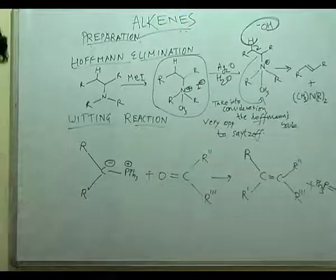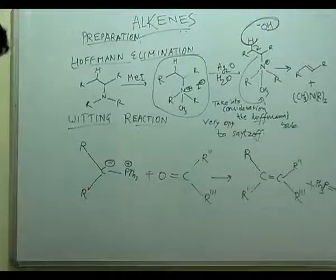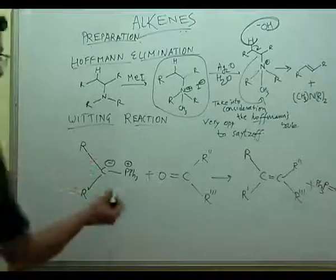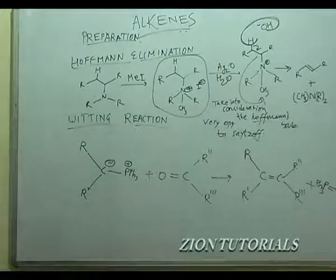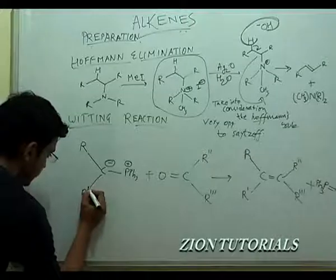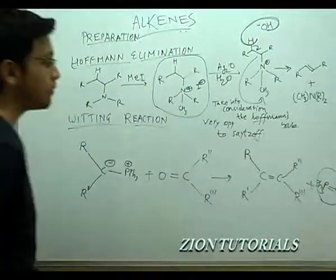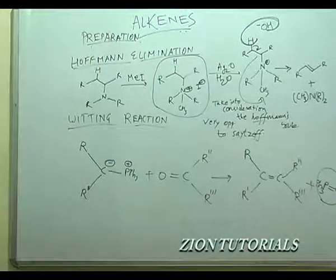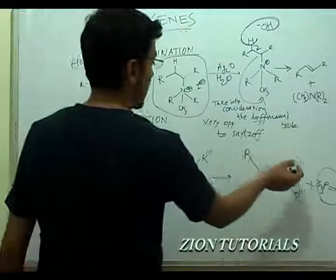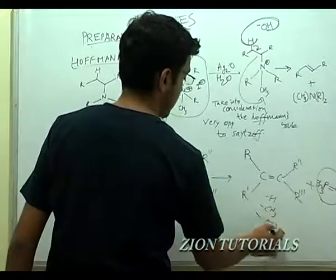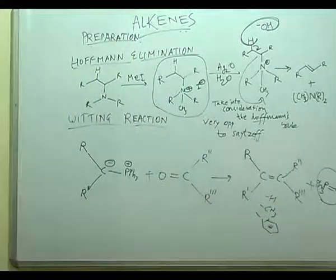The Wittig reaction is a convenient method for converting aldehydes and ketones into alkenes using a special reagent called the Wittig reagent — a phosphorus compound containing three phenyl rings and two alkyl groups (R' groups). After the reaction, the phosphorus extracts the oxygen to form the side product Ph3P=O, and the respective alkene is obtained. R, R', R'' can be H, methyl, phenyl, or any alkyl group.